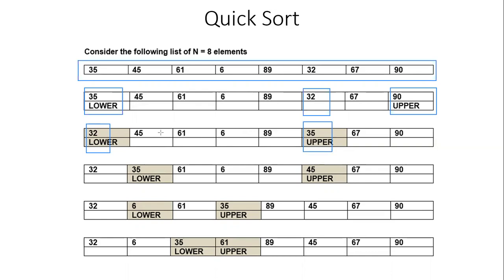Now 35 is at the upper index and 32 at the lower. We start from the lower index and move right to find an element greater than 35 — the first element, 45, is greater, so swap 35 and 45. Repeat: starting from 45, move left to find something smaller than 35 — 6 is smaller, so interchange 6 and 35. Then start from 6, move right to find something greater than 35 — 61 is greater, so replace those two.